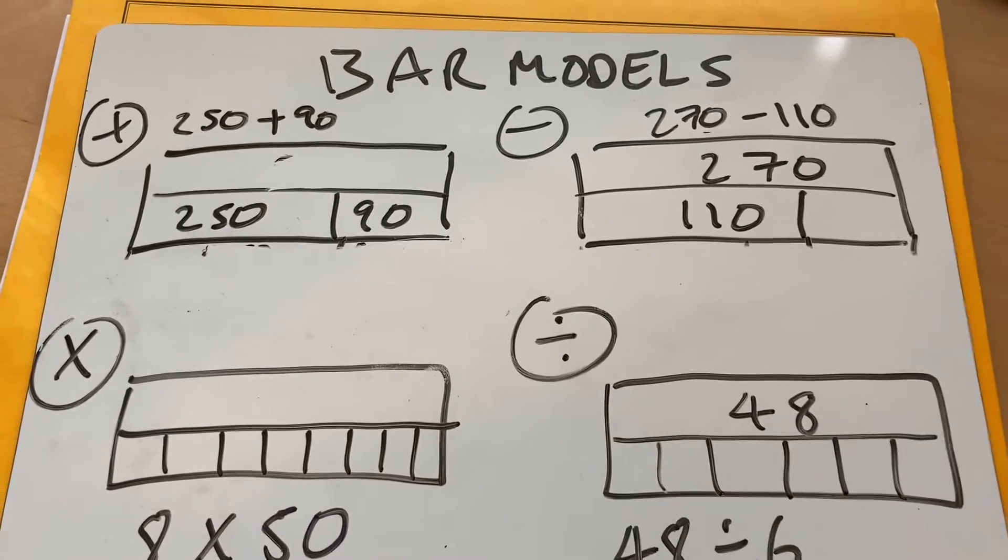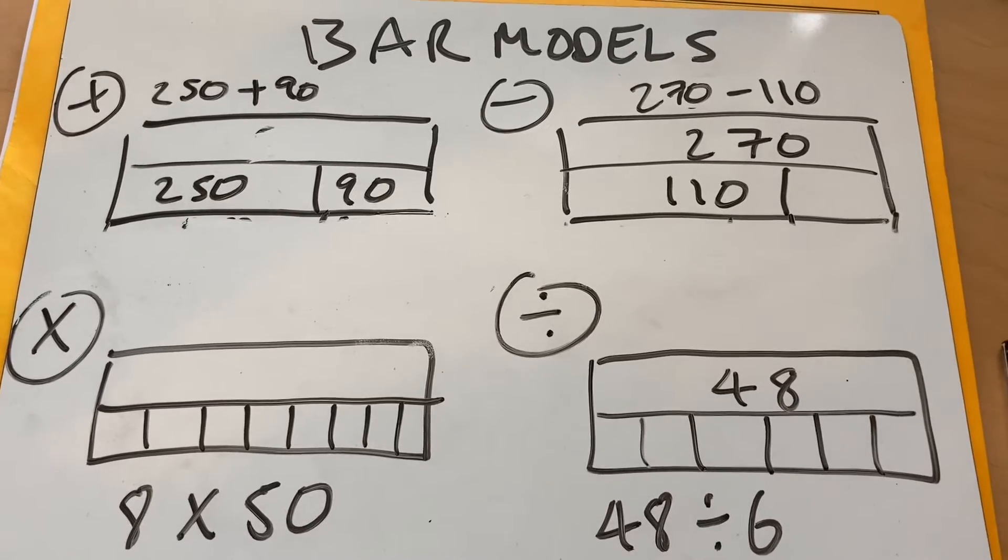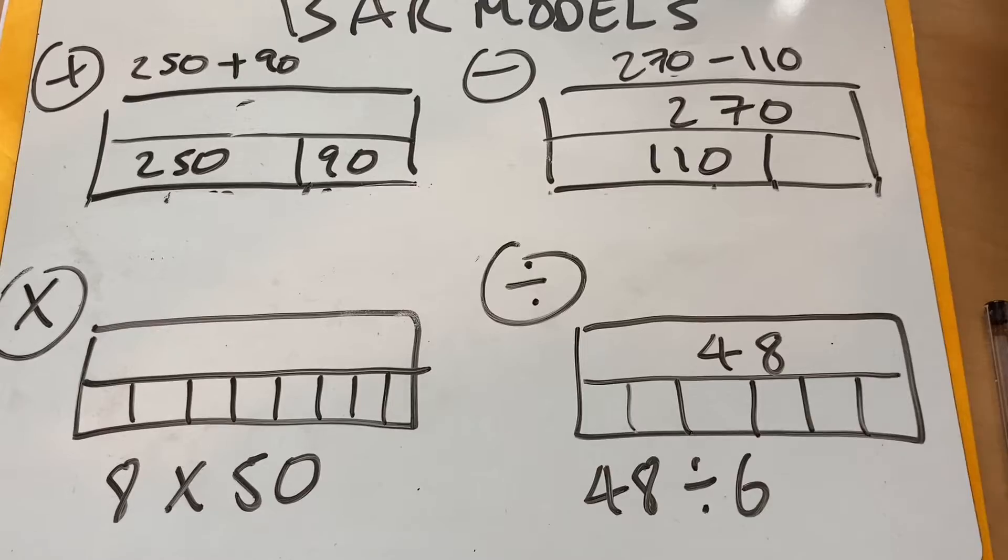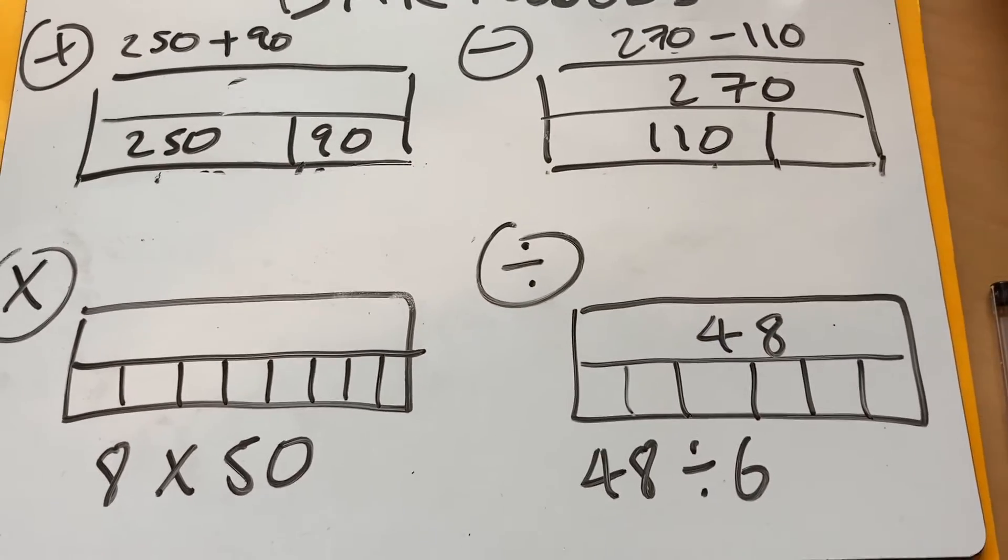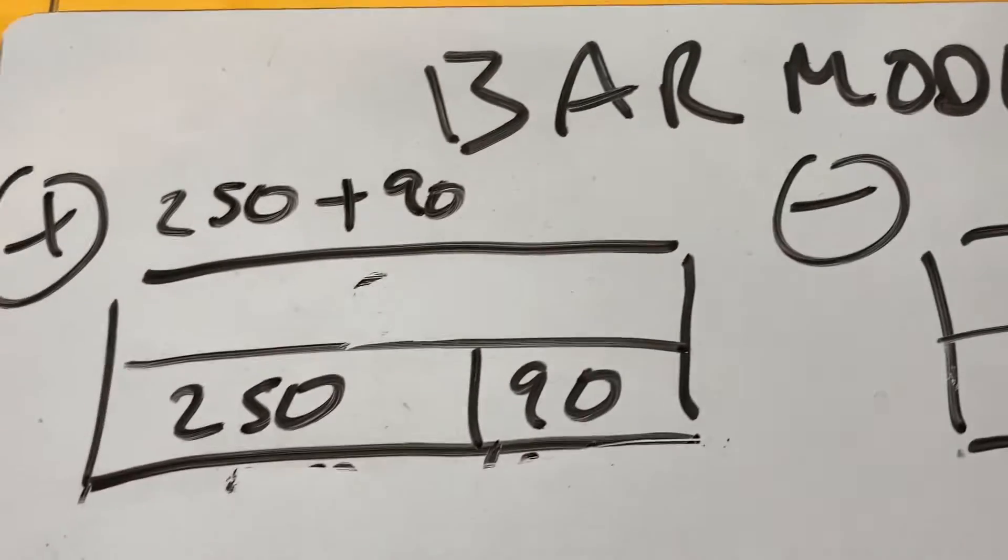Hello and welcome to MartinMaths. We're going to look at how bar models can help us explain arithmetic terms: adding, subtracting, multiplying, and dividing. And also when you get to multiplying, we might look at some factors and multiples. But let's start with addition.